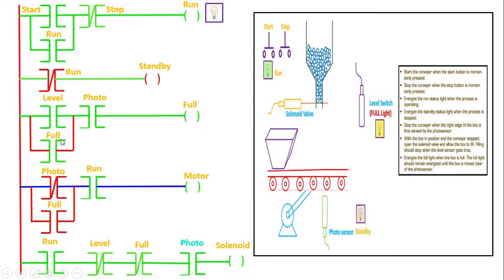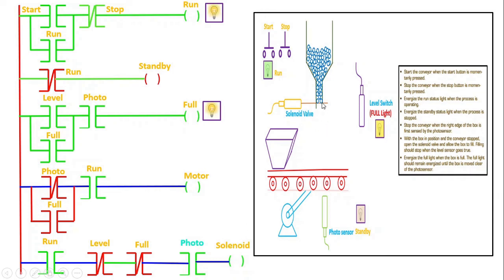Once the level switch goes high, the run contact gets energized and the full status coil becomes energized. Due to latching, the full contact address is also energized here, so the full light is now glowing. The level was energized and the full sensor was energized — as a result the normally closed level and full contacts become open circuit, the supply is cut off, and the solenoid valve which was open becomes closed again, so the substances stop flowing.